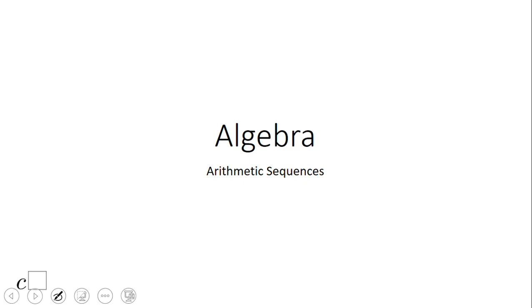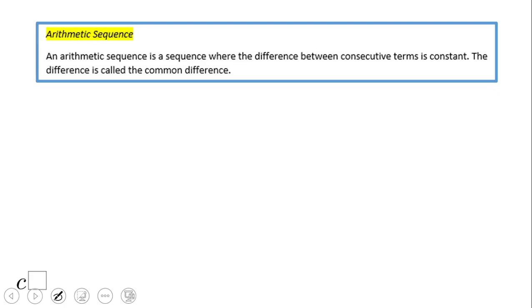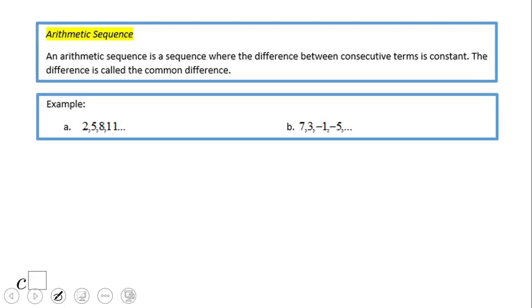Welcome back on C-Square. In this video we're going to talk about arithmetic sequences. We have here two examples of arithmetic sequences: 2, 5, 8, 11 — you notice the sequence is generated by adding 3.